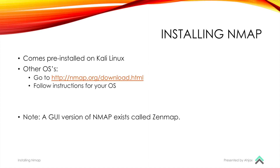If you're using Kali Linux, it's going to come pre-installed, so you won't need to do anything. If you're using a different operating system — a Mac, Windows, or another Linux distro — go to nmap.org/download.html and follow the instructions there for your operating system. This should go pretty quickly and it's pretty straightforward. If you do run into errors, feel free to comment below and we'll try to answer them. Another good resource of course is Google and Stack Overflow.